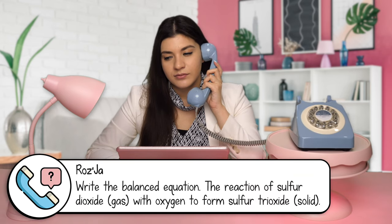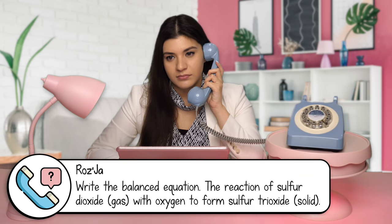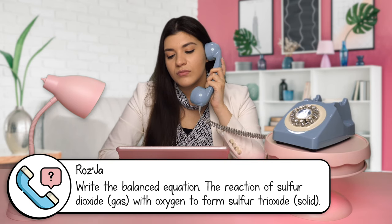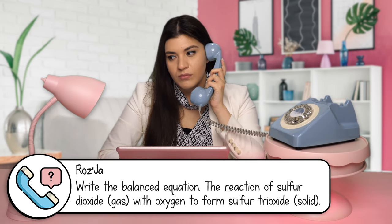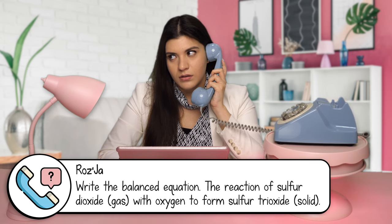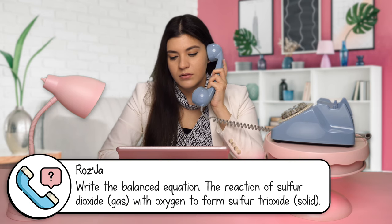Hey, you're on the Tutor Hotline with Melissa Maribel. How can I help you? Hey Melissa, I'm having trouble with answering this question. It says write the balanced equation for each reaction below. Question C is stating the reaction of sulfur dioxide with oxygen to form sulfur trioxide solid.